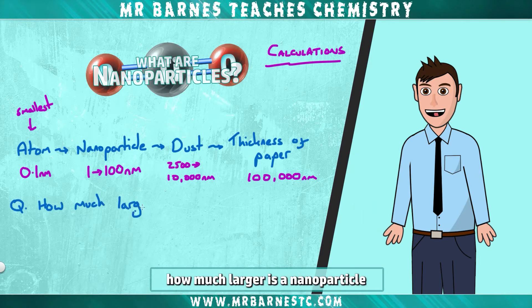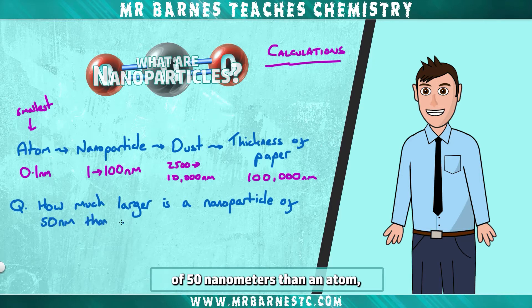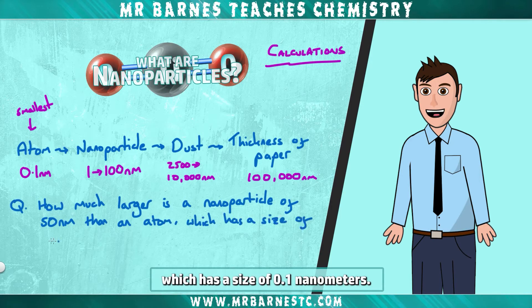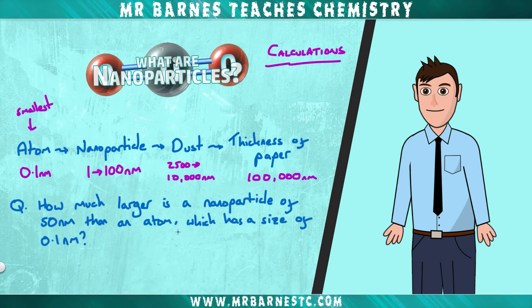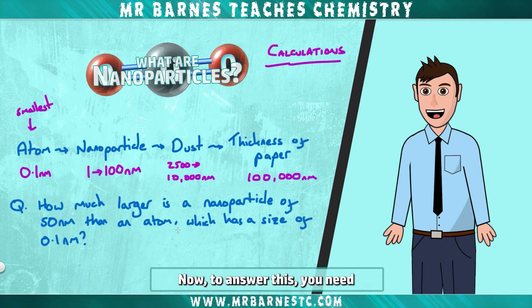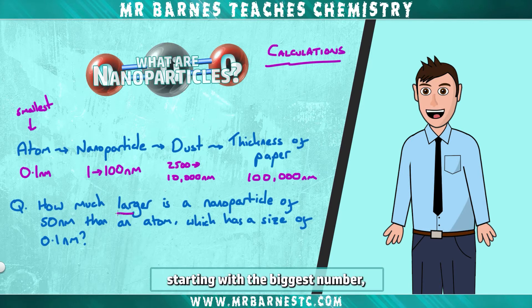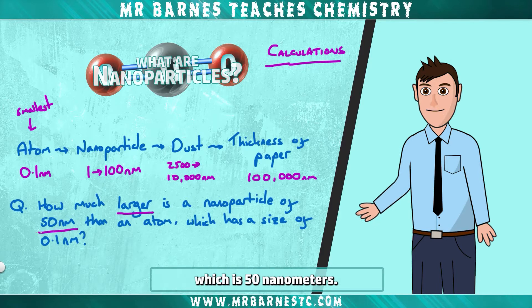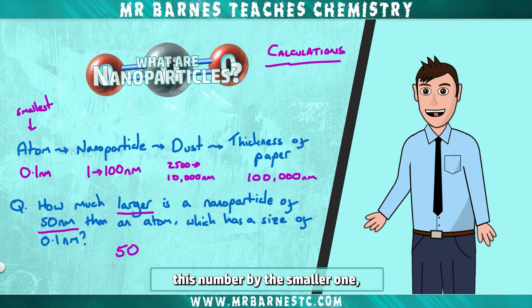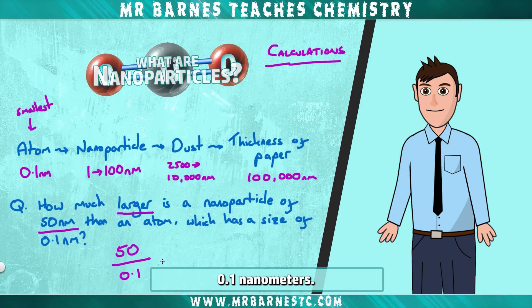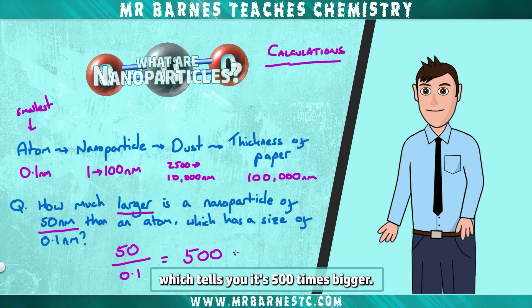For example, how much larger is a nanoparticle of 50 nanometers than an atom, which has a size of 0.1 nanometers? To answer this, you need to do a comparison, starting with the biggest number, which is 50 nanometers, then dividing this by the smaller one, 0.1 nanometers. So 50 divided by 0.1, which tells you it's 500 times bigger.